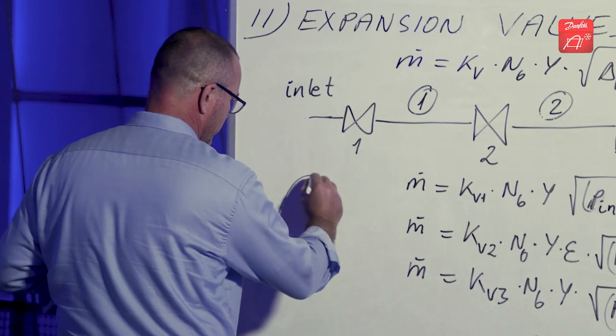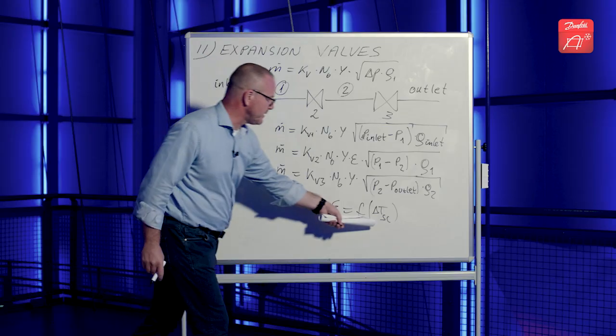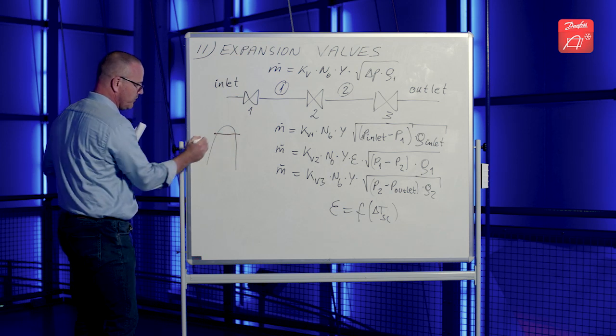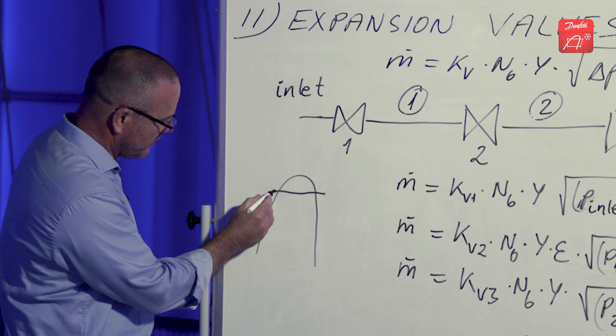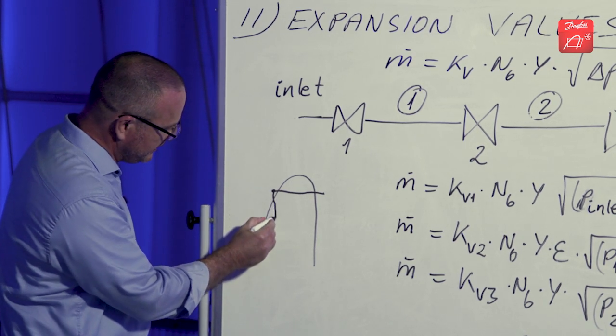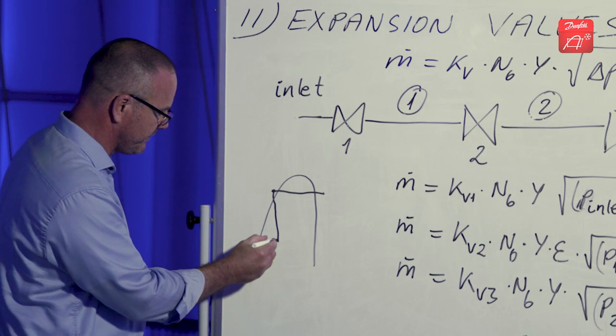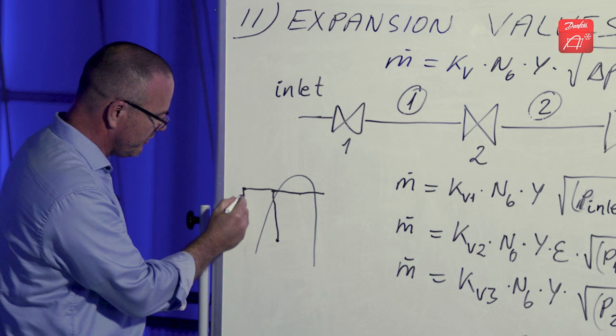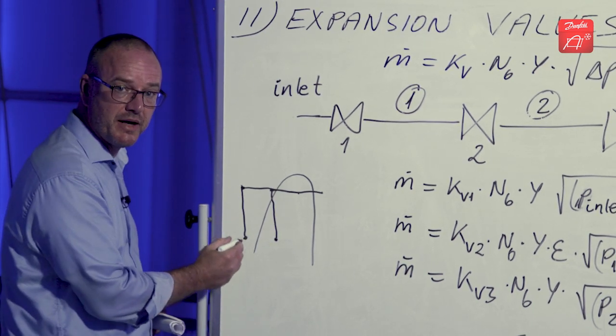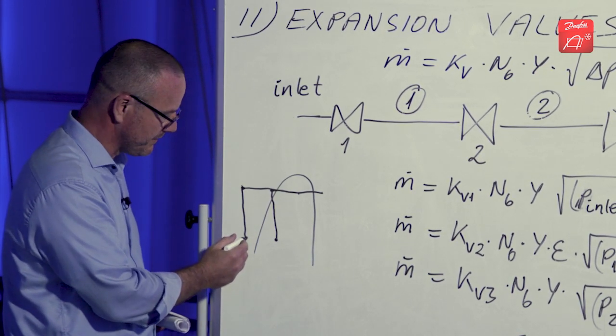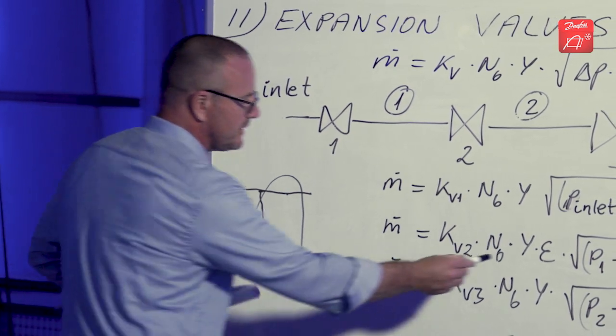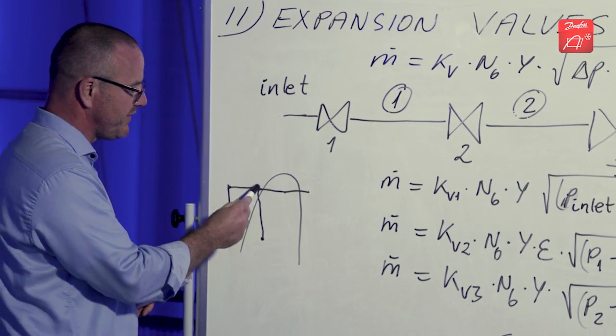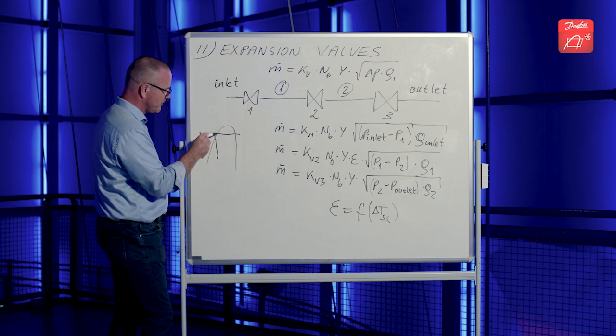Now, the reason we correct this equation set with the subcooling is that if you start with a very low subcooling for the expansion valve, you start out by immediately expanding into the two-phase area. On the other hand, if you have a very large subcooling, you can actually end up in a situation where you're just expanding out of the liquid area all the time. So, this epsilon has a value of 1 for very large subcooling and it has a value less than 1 for very low subcooling.